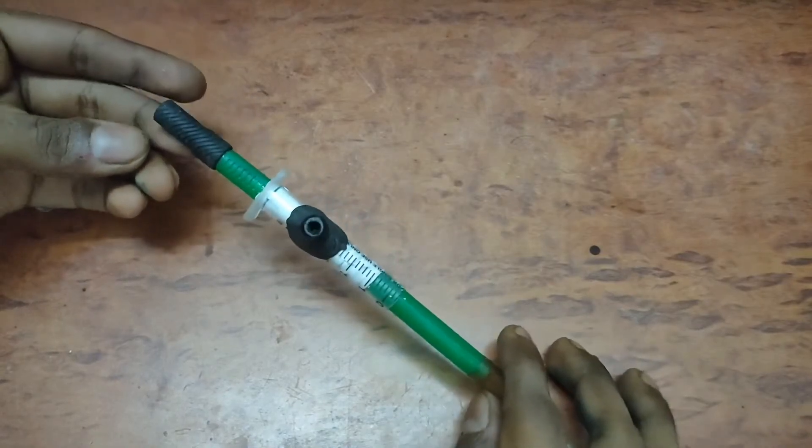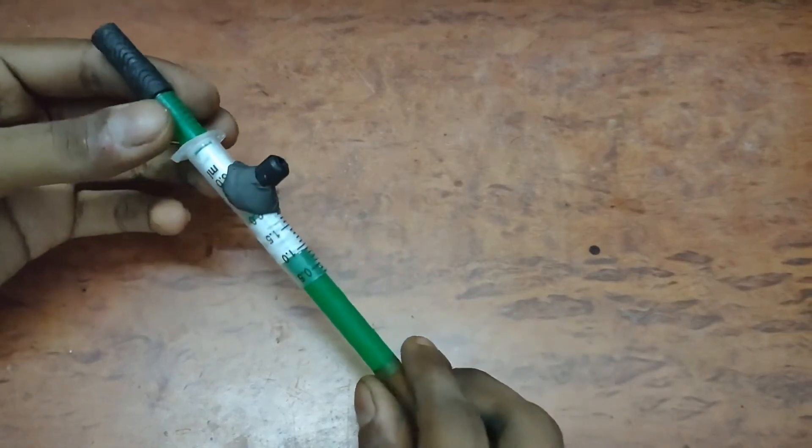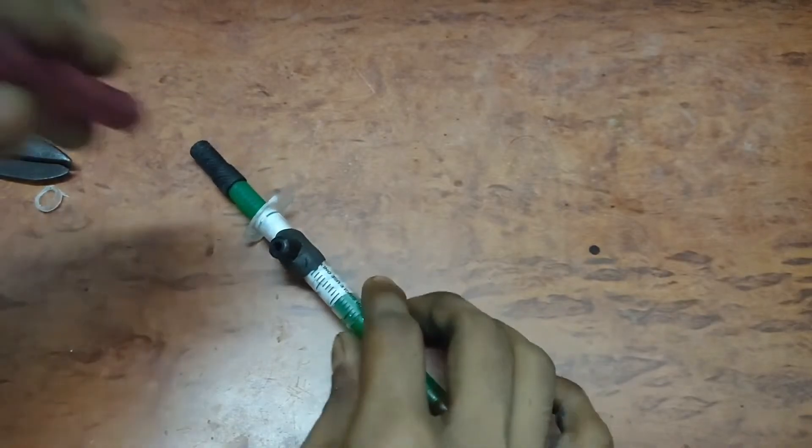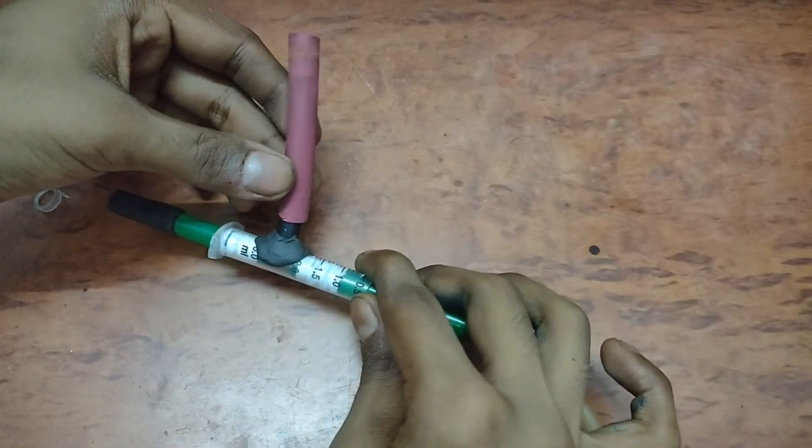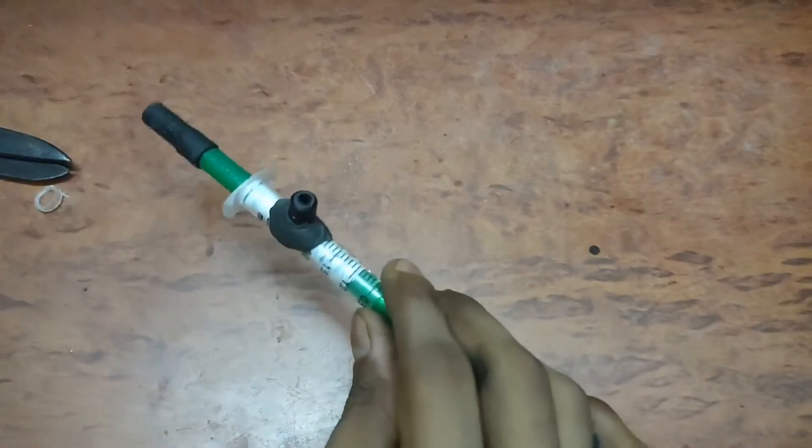The black nozzle which we have secured is our vacuum hose, and you can see that the rubber tube can be attached very nicely in this.